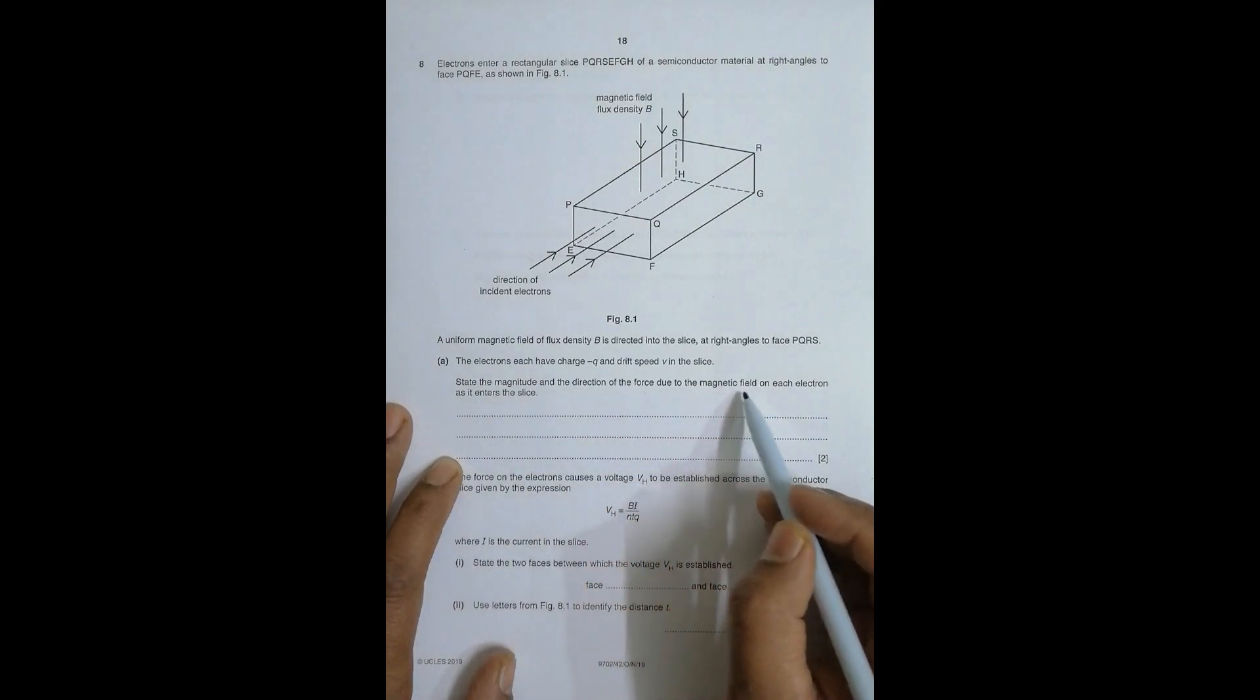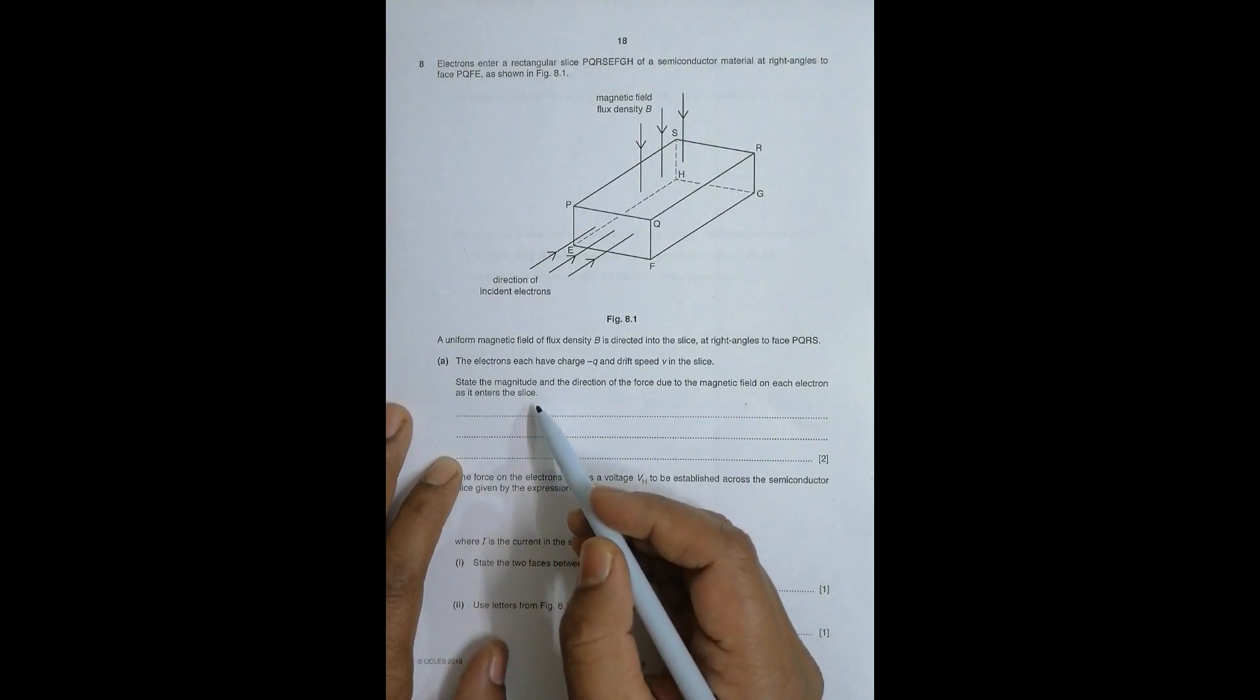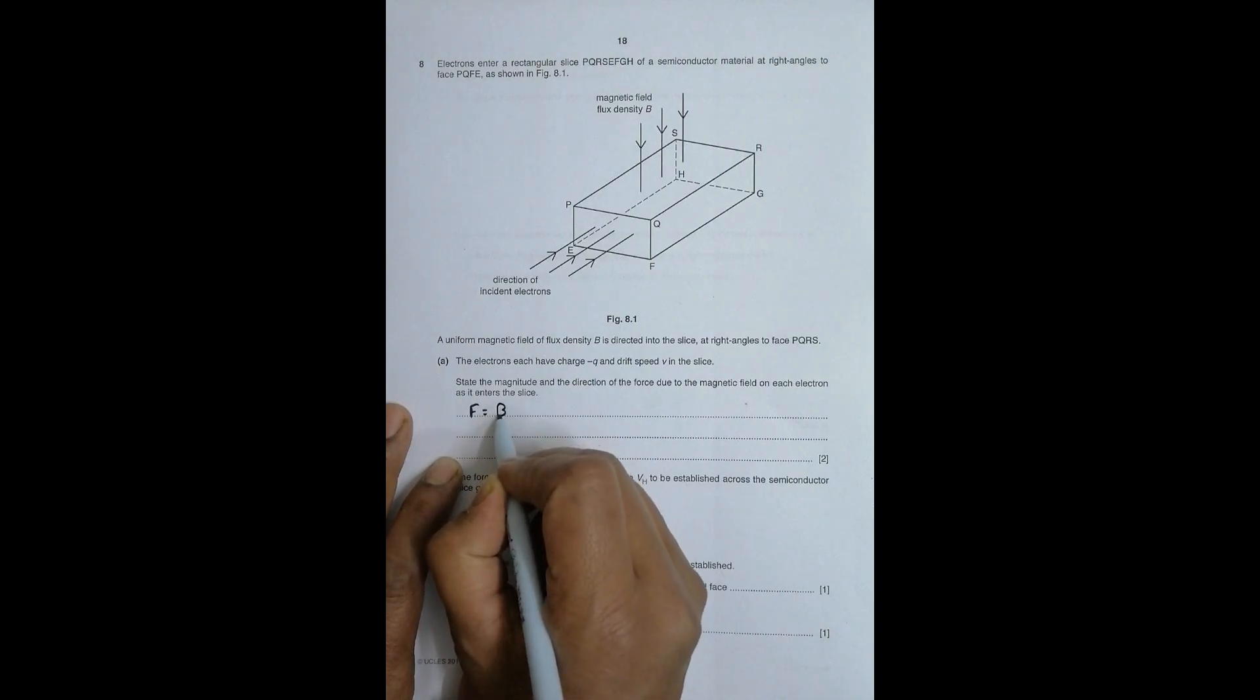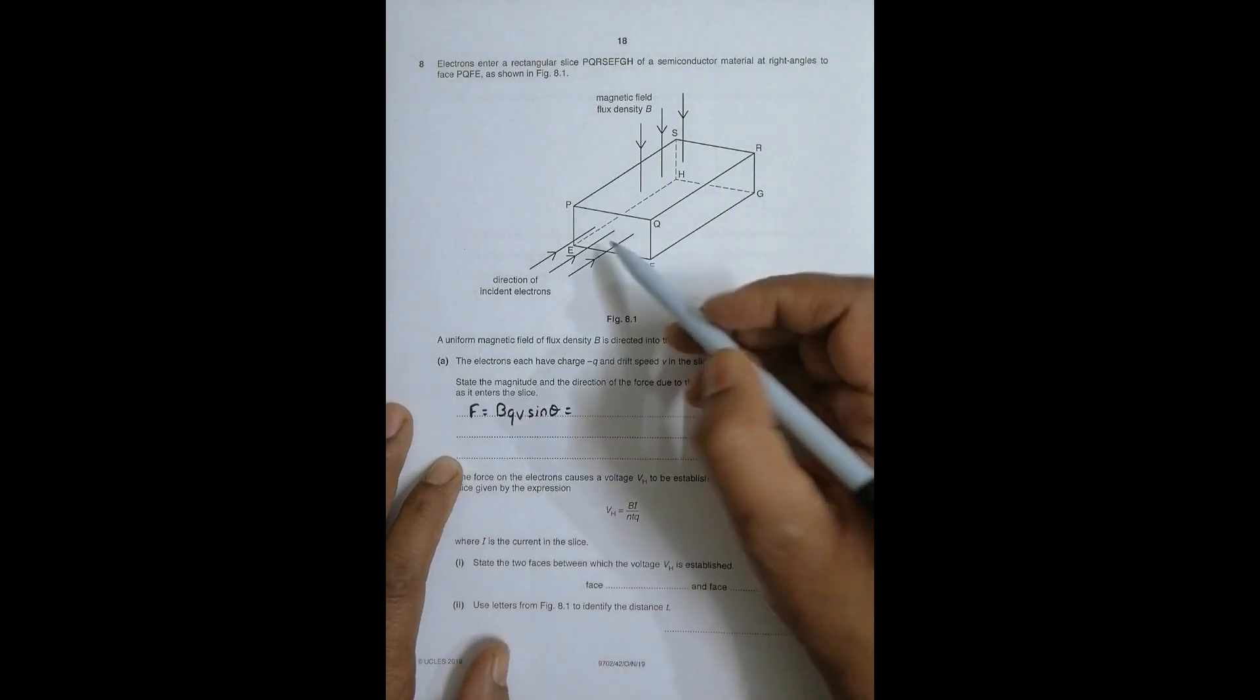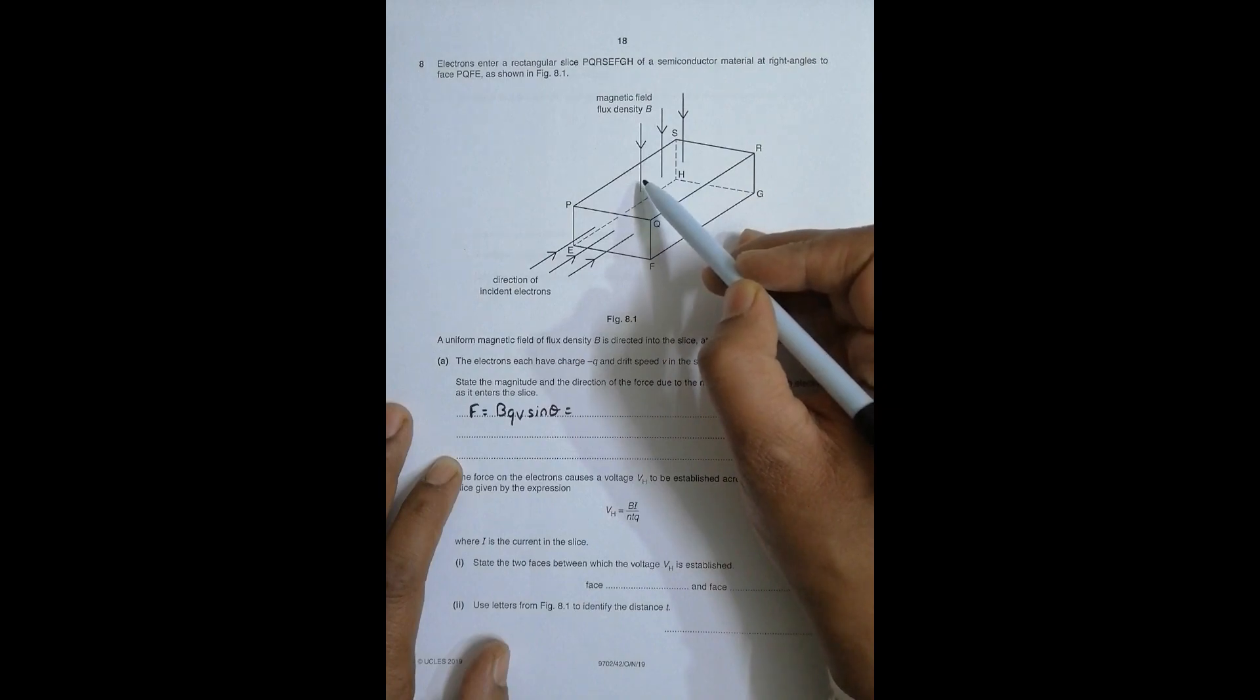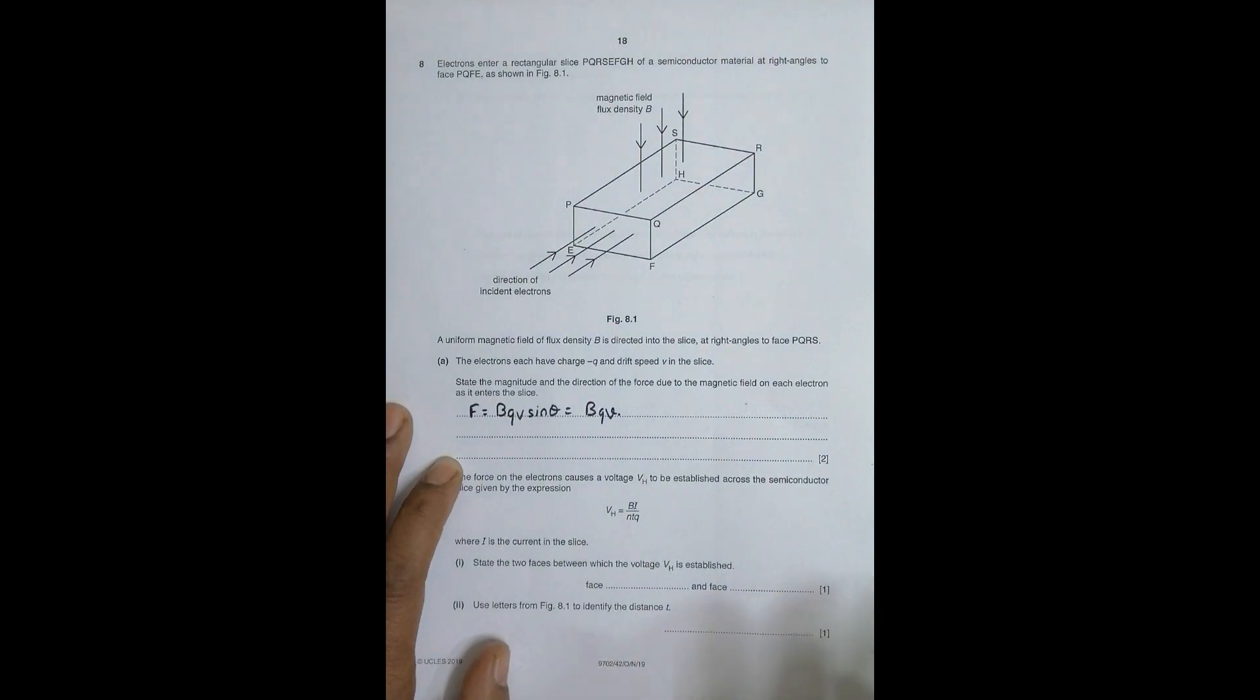State the magnitude and direction of the force due to the magnetic field on each electron as it enters the slice. The value of the force is F equals BQV sine theta. Since the direction is here and the magnetic field direction is here, theta is 90 degrees, so it should be equal to BQV. I didn't use the sine here because I have to state the direction separately.